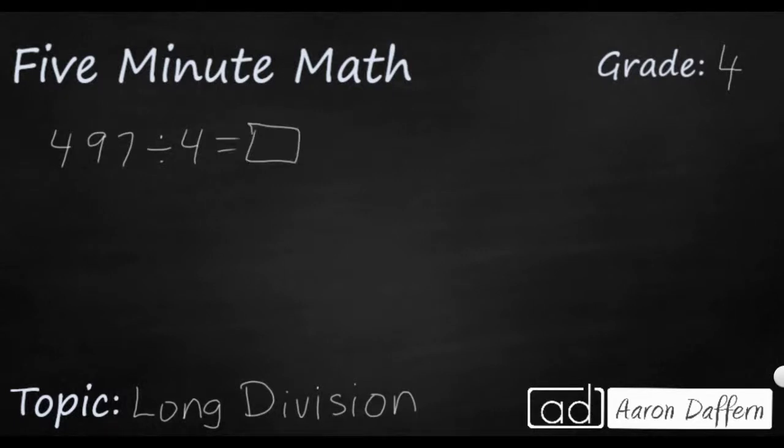So we have a simple problem here, 497 divided by 4. Let me make sure that we know what each of these numbers are called, because when you see the division problem left to right, the numbers are in different locations. The dividend is the largest number, that's what you're dividing into, and the number you're using to do that is the divisor. The answer to a division problem is called a quotient.